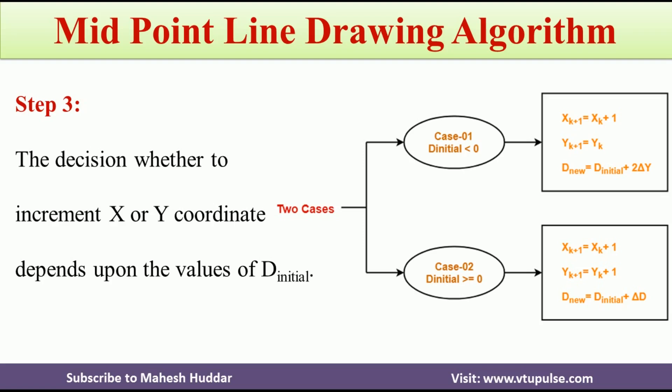In case number one, XK plus one is equivalent to XK plus one, YK plus one is equivalent to YK, and D new is equivalent to D initial plus two times DELTA Y.